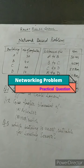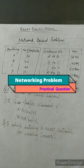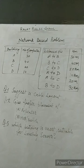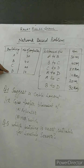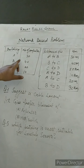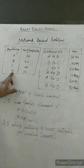Namaskar students, I hope you all are well. I have seen some practical questions from the NCERT related to networks, and such questions sometimes arise in the exam. So I am demonstrating one such problem. A company has four buildings: A, B, C, and D. In each building they have computers — building A has 30, building B has 40, building C has 20, and building D has 10.